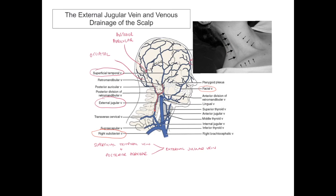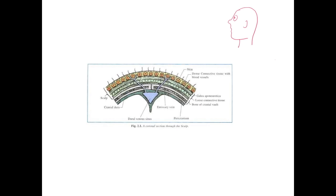Let's turn our attention to another connection between superficial veins — this time the veins of the scalp — and these deeper venous structures, the dural venous sinuses. We'll look at a final image showing how these two relate. In this image, we're looking at a coronal section through the scalp, looking straight on to what we can see.